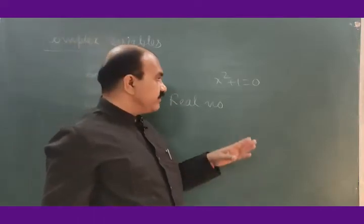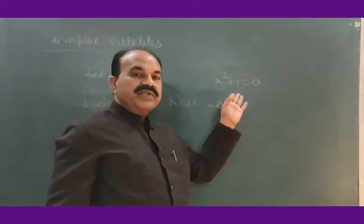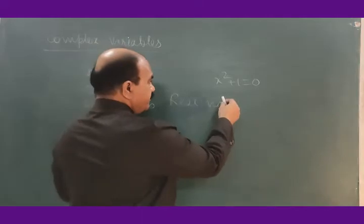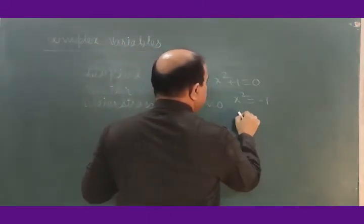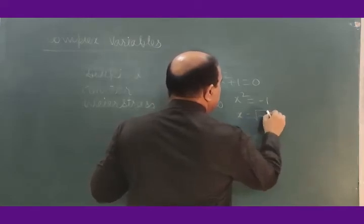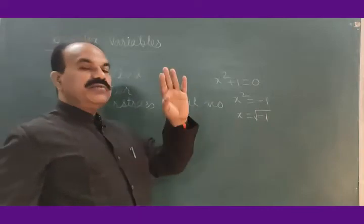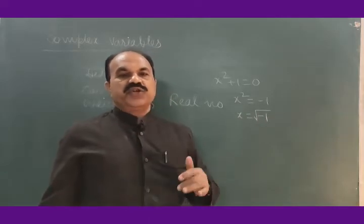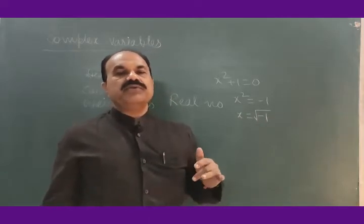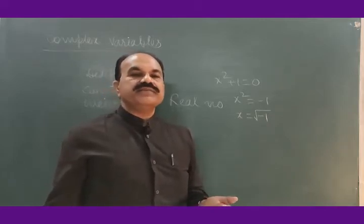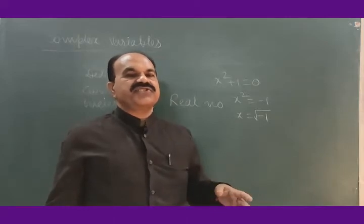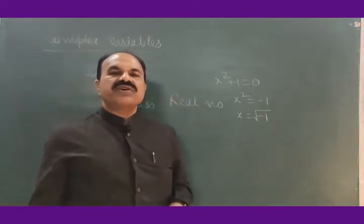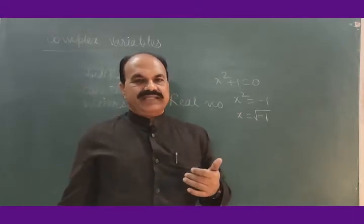These people found that x squared plus 1 equal to 0 has no solution in real numbers, because x squared equals minus 1, meaning x equals the square root of minus 1. The square root of minus 1 is not a real number — it is not possible to find the square root of a negative number. So whenever mathematicians and physicists came across such problems, they found that real numbers are not sufficient to provide all types of mathematical needs.